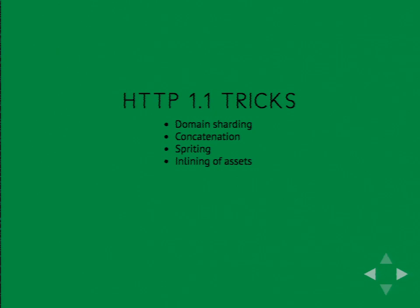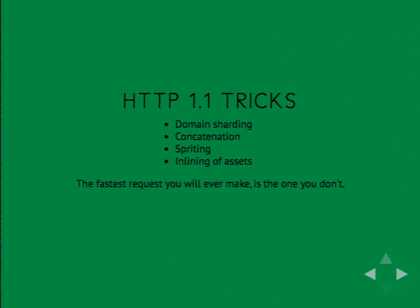We can also inline assets where it makes sense — possibly base64-encoding very small images, inlining critical CSS or JavaScript — because each one reduces TCP requests and therefore round trips. Really, the best thing you can do is make fewer requests: the fastest request you can ever make is the one you don't make. If you're loading all of Drupal core CSS, remove most of it and add what you need into your own theme, reducing the data otherwise sent.